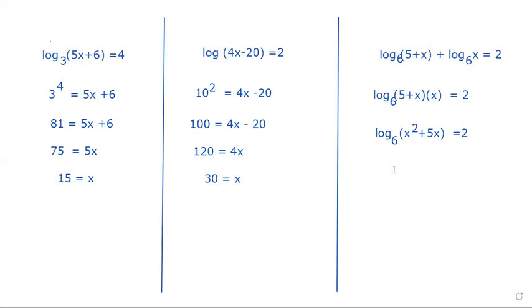Now we go back to doing this the way we did the previous problems. We're going to have to rewrite this. The base is 6, 6 to the second power is equal to x squared plus 5x. That gives us 36 is equal to x squared plus 5x.